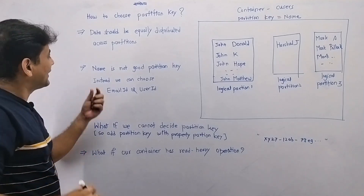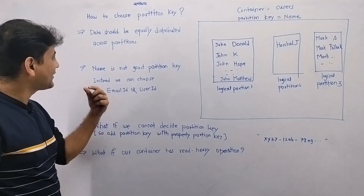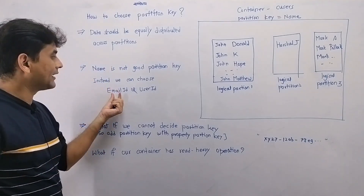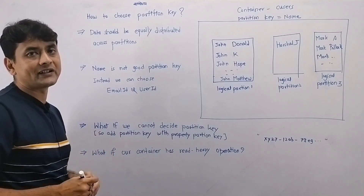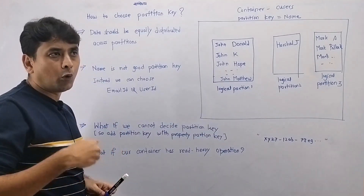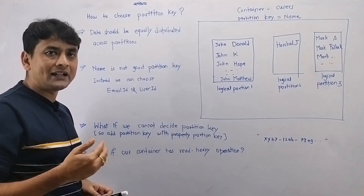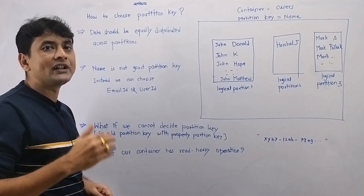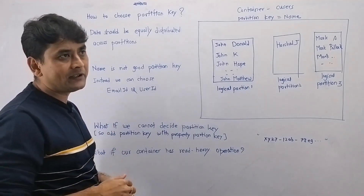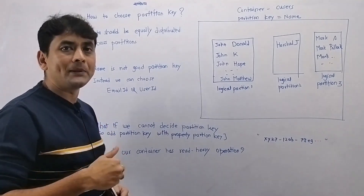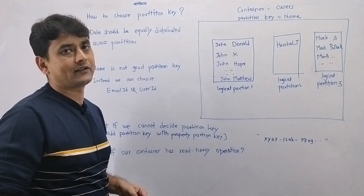Instead of selecting name as a partition key, we can select email ID or user ID as a partition key, because most probably email ID and user ID will be unique for each user. Because it is unique, data will be equally distributed across the logical partitions.